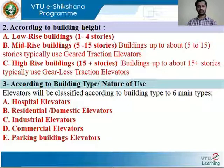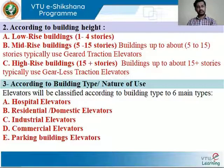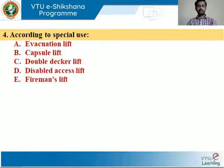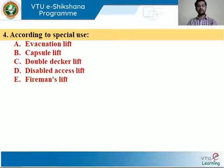The third classification is according to building type or nature of use, which includes hospital elevators, residential or domestic elevators, industrial elevators, commercial elevators, and parking building elevators. The fourth classification is according to special use: evacuation lift, capsule lift, double decker lift, disabled access lift, and fireman's lift.